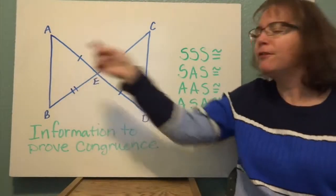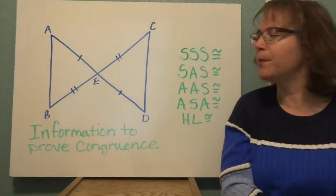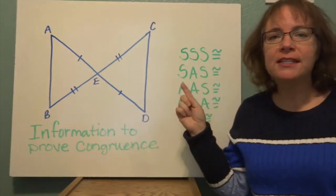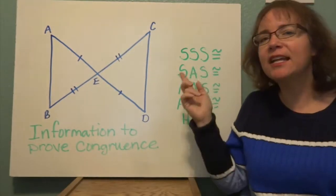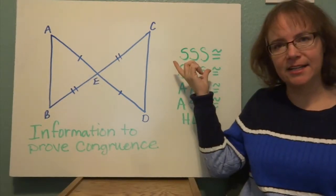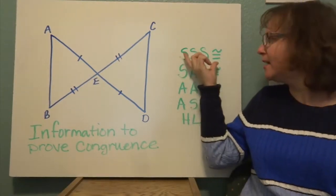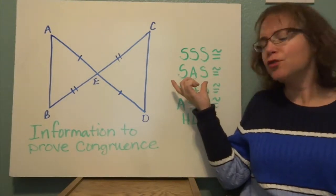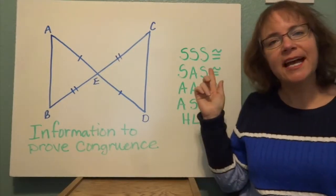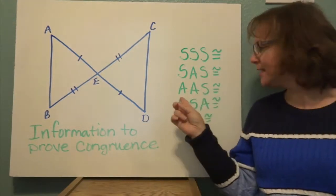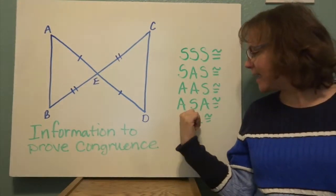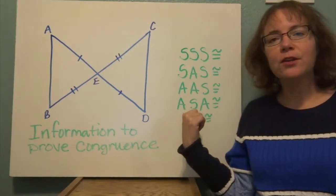First of all, if we prove all of the corresponding sides are congruent and all of the corresponding angles are congruent, the triangles are congruent. However, we looked at some shortcuts. For example, if we know all of the corresponding sides are congruent, we can say the triangles are congruent — that's side-side-side congruence. We also have side-angle-side: if we have that corresponding angle sandwiched between two corresponding congruent sides, the triangles are congruent. There's also angle-angle-side, angle-side-angle congruence, and if the triangle is a right triangle, we can use the corresponding hypotenuse and leg — if they are congruent, the triangles are congruent.